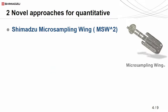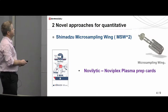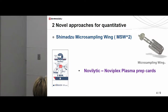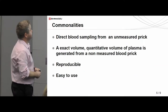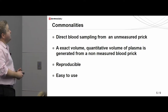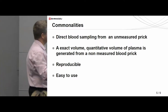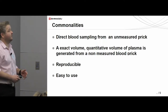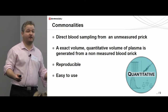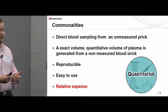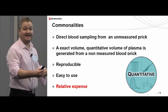In this presentation, I'm going to talk about two novel approaches for quantitative micro-sampling: one being a device made by Shimadzu called the micro-sampling wing, and another device made by a company called Novalytic, which partners with Shimadzu Scientific — the Noviplex plasma prep cards. There are some commonalities between these two approaches: they both take direct blood sampling from an unmeasured prick, they create an exact quantitative volume of plasma, they're reproducible and easy to use, and I believe these devices to be incredibly quantitative. The other commonality is they're incredibly expensive — there's always a trade-off.